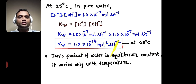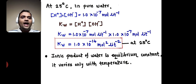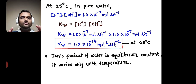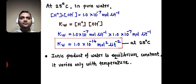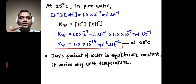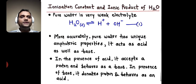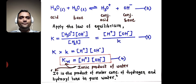Ionic product of water is an equilibrium constant, therefore it varies only with temperature. You have to remember this statement. As ionic product of water is an equilibrium constant, it varies only with temperature. This is all about the ionization constant and ionic product of water.